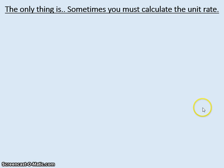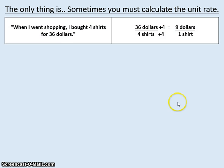The thing is sometimes you must calculate the unit rate. You can't just come up with that statement to begin with. So for example when I went shopping I bought four shirts for $36. You're still making a rate comparison by saying $36 is four shirts, but to be a unit rate it needs to be one shirt. So reduce it by four. Divide both the numerator and the denominator by four to get $9 for one shirt. This is a unit rate because it's comparing how much for one.